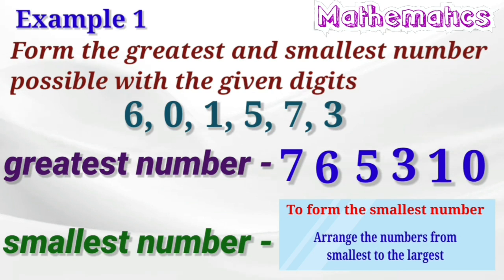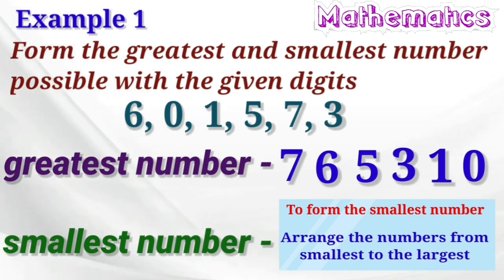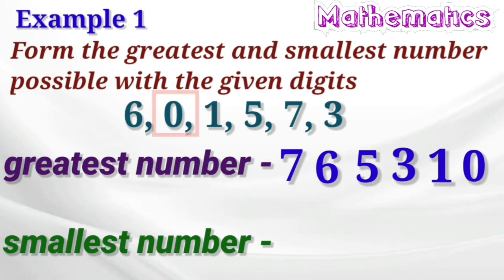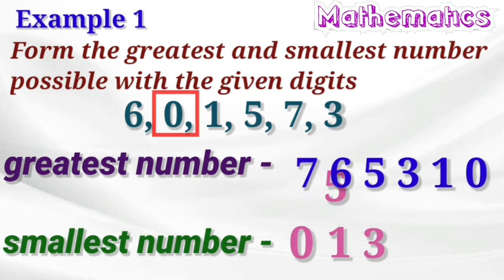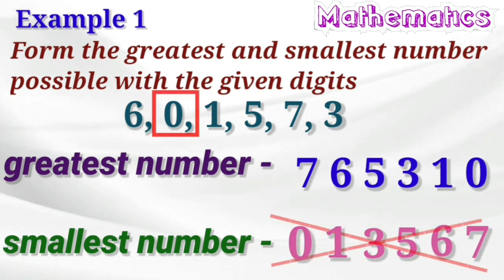For the smallest number, arrange the digits in ascending order. Arranging numbers from smallest to the largest is called ascending order. Yehaan per sabse small digit hai 0, then 1, then 3, then 5, then 6, then 7. But it is absolutely wrong. Hamei aisa nahi likhna chahiye. Yeh bilkul khalat hai.